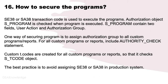How do you secure programs in the SAP system? SE38 or SA38 transaction codes are used to execute programs. Authorization object S_PROGRAM is checked when a program is executed. S_PROGRAM contains two fields: User Action and Authorization Group. One way of securing programs is to assign an authorization group to all custom programs or reports, and include an AUTHORITY-CHECK statement. Custom T-codes are created for all custom programs so that S_TCODE is checked. The best practice is to avoid assigning SE38 or SA38 transactions in the production system.